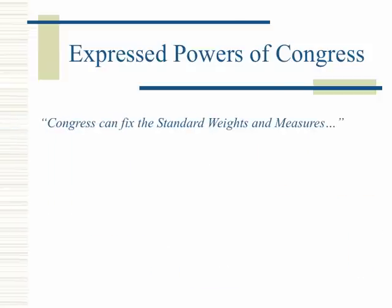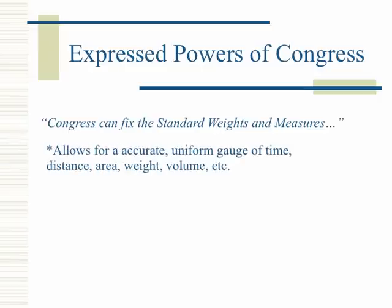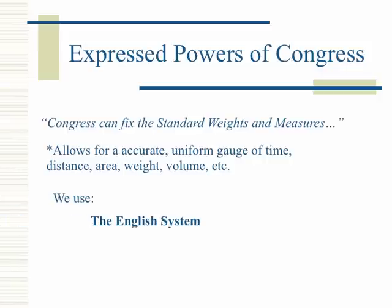Congress can fix the standard weights and measures, allowing for an accurate, uniform gauge of time, distance, area, weight, volume, etc. The United States uses the English system — for example, pounds, miles, inches, ounces, gallons, etc.